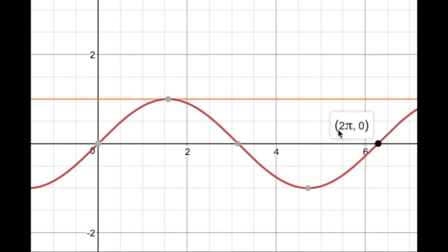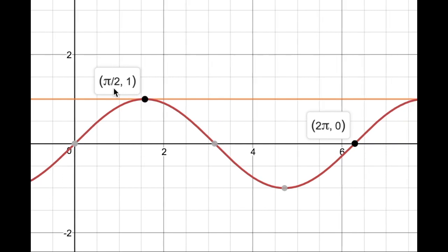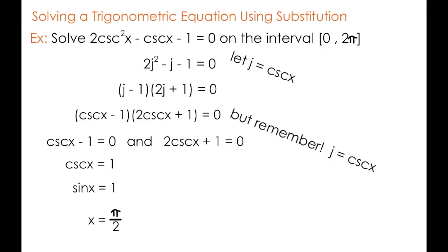Now on the interval [0, 2π], there's only one place where sine of x is equal to 1, and that's at π/2. I'm using my understanding of the graph of sine of x here, but you can also come up with this answer using the unit circle, which I won't do in this video just to keep it brief. So we've determined that the solution to the equation on the left is π/2.